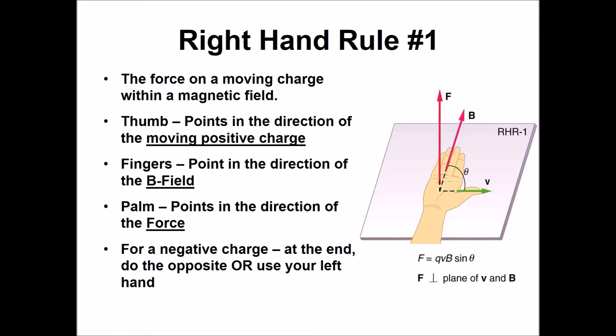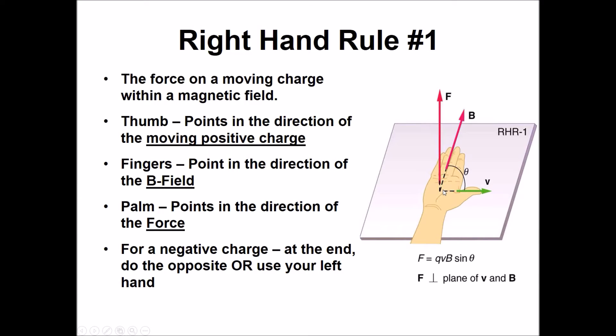Now that we've found the magnitude of the force, let's look at the direction. This starts out quite hard, but once you get it, it's actually simple. We're going to use what's called the right-hand rule — I'll refer to this as number one, since we'll have several. Take your right hand laid out flat: the thumb represents the velocity of a positive charge, the fingers point in the direction of the magnetic field, and the palm indicates the direction of the force.